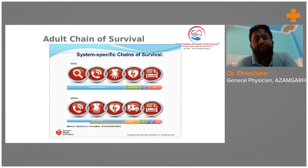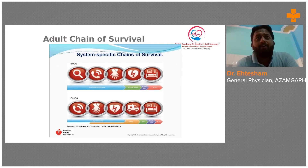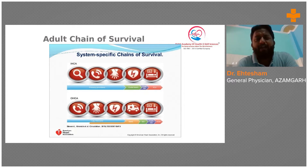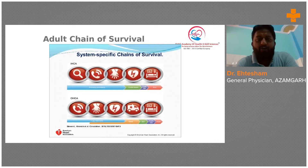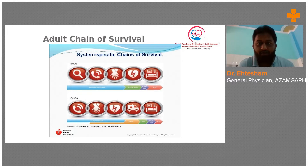When the patient has achieved ROSC, we don't directly shift them home or to the ward. We take care of that patient and move them into the recovery zone. That is the last and final link added in the 2020 adult chain of survival. We have now gone through the in-hospital chain for adults.